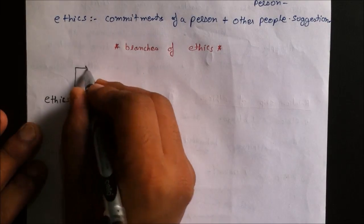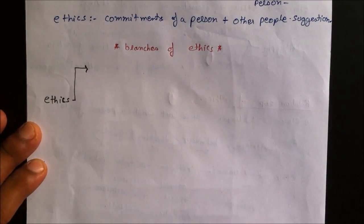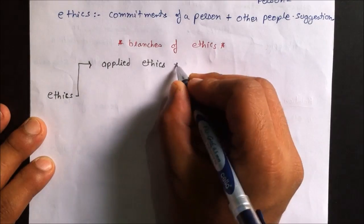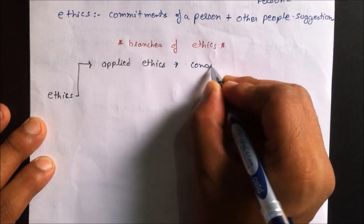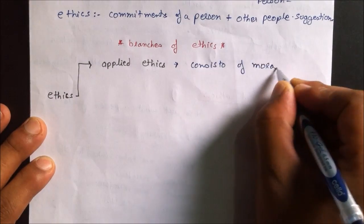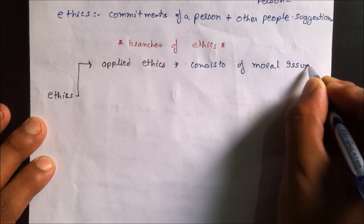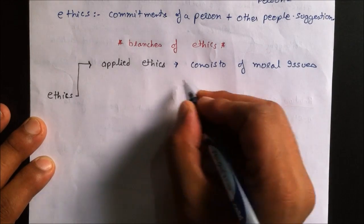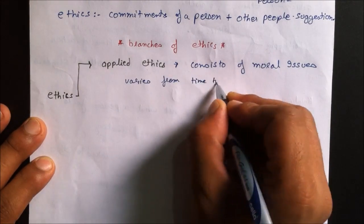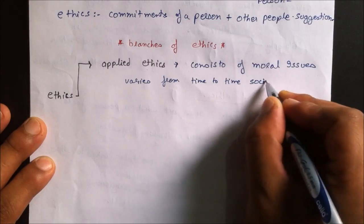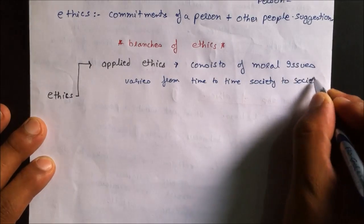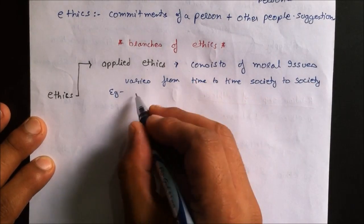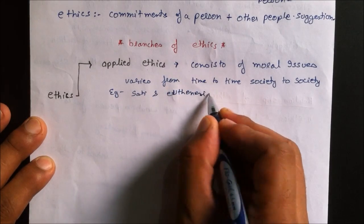Now talking more about Ethics. Ethics has been divided into three branches. Applied Ethics consists of moral issues — a group of people decide jointly that this work is ethical or unethical. These vary from time to time and society to society. For example, Sati and Euthanasia.